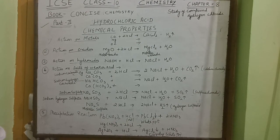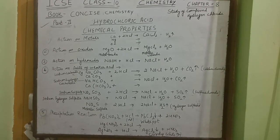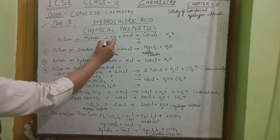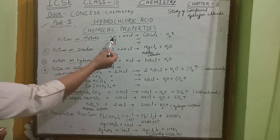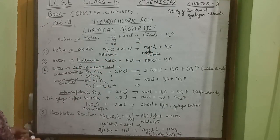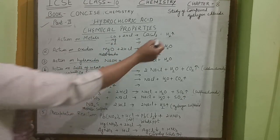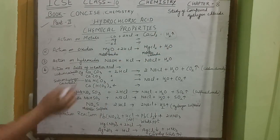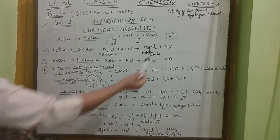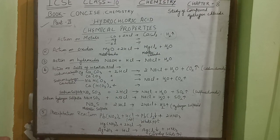Now let us look at the chemical properties of hydrochloric acid. The first reaction is the action of hydrochloric acid on metals — such as calcium, magnesium, and zinc. When hydrochloric acid reacts with calcium, it forms calcium chloride and hydrogen gas is evolved. In general, whenever a metal reacts with hydrochloric acid, it forms a metallic chloride and hydrogen gas is evolved.